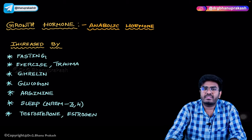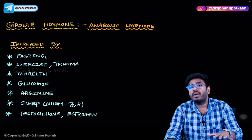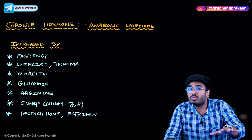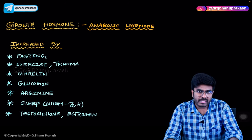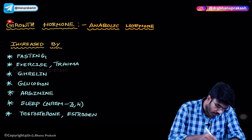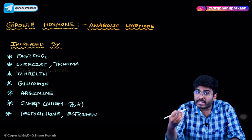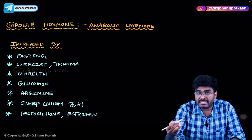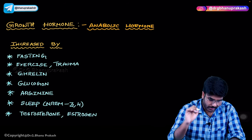Now, what are the conditions in which growth hormone levels are elevated? One of the most important functions of growth hormone is to increase blood glucose levels. So any condition associated with low glucose levels — or conditions where more glucose is required — will lead to increased growth hormone production.